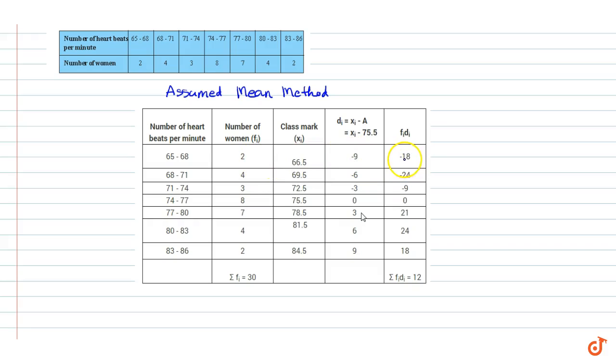So we get sigma of fi di that is equal to 12, and the sum of the frequencies is sigma fi equal to 30.